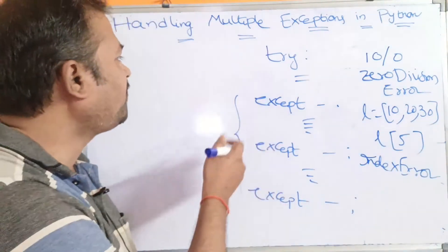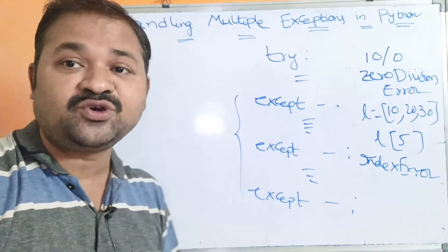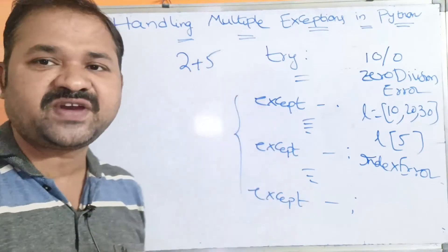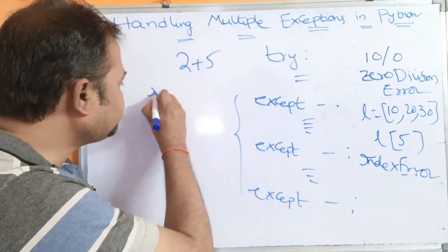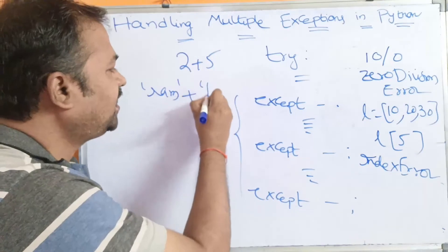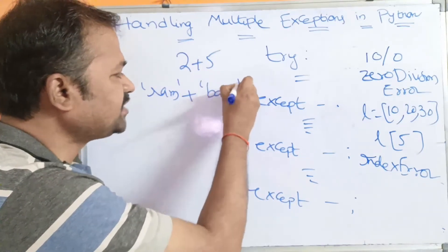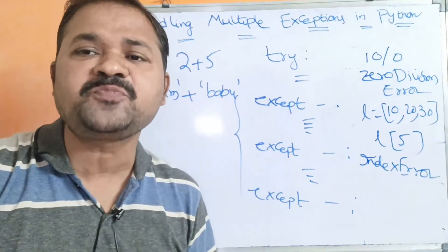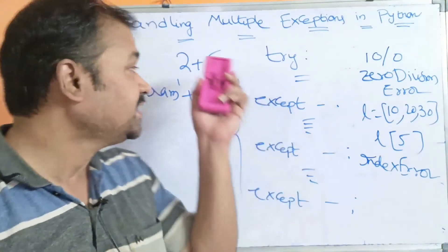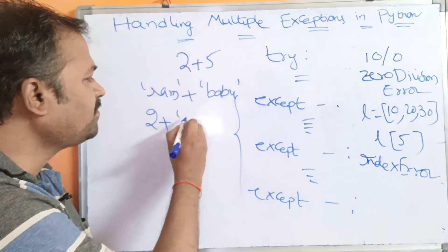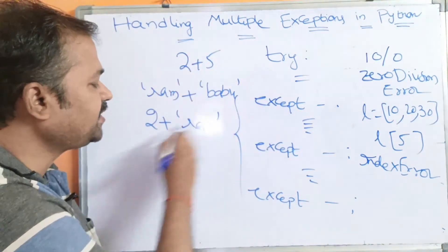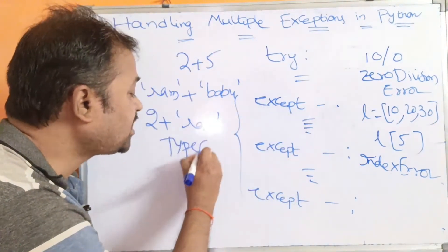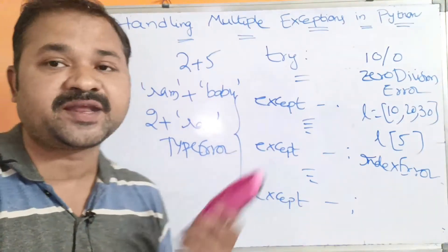If we try to perform an unsupported operation — for example, adding a number and a string — we know we can add two numbers (2+5=7) or concatenate two strings ('Ram'+'Babu'='RamBabu'), but adding a number and a string throws a TypeError exception, and the control goes to the except block with the TypeError class.